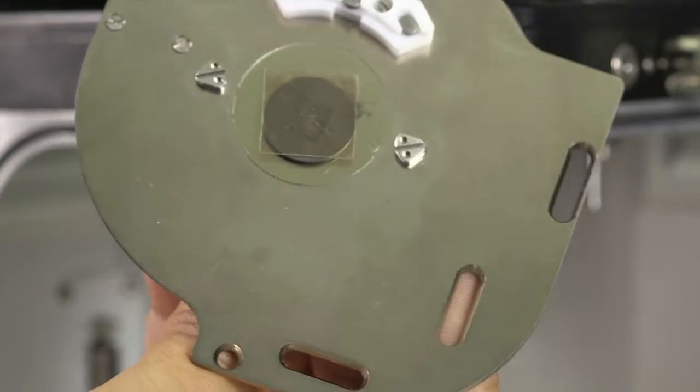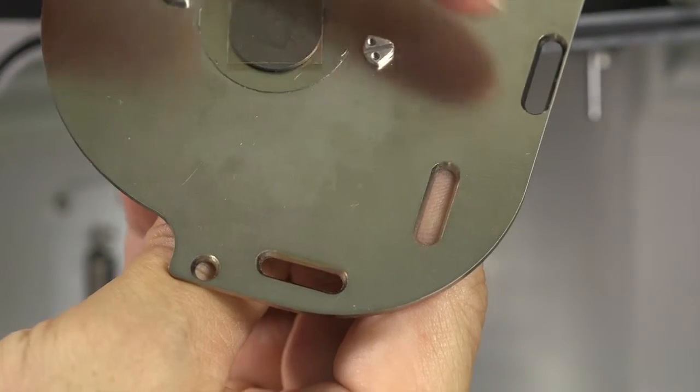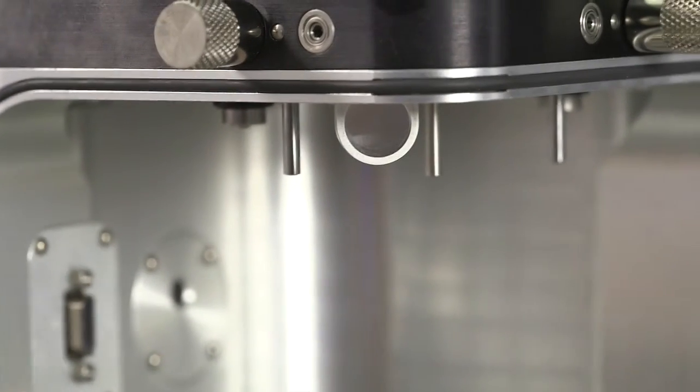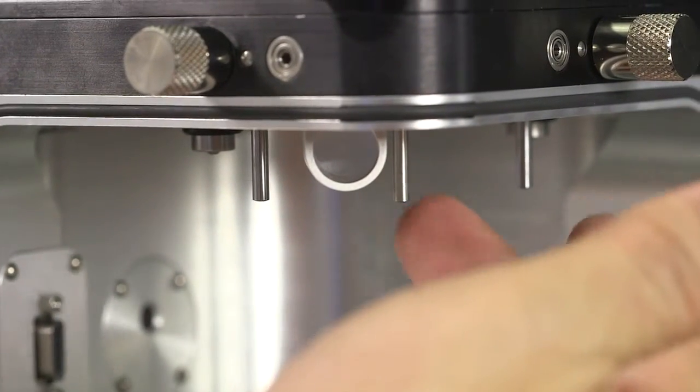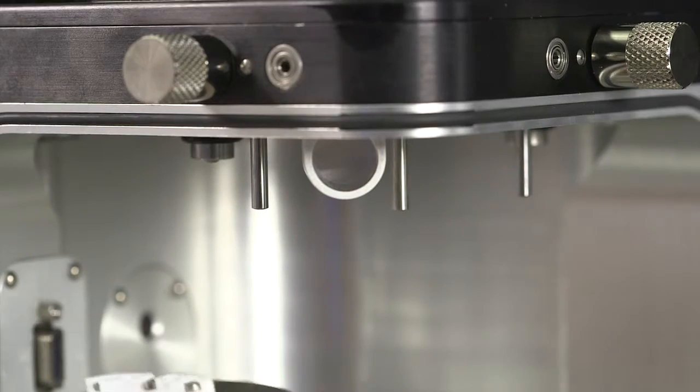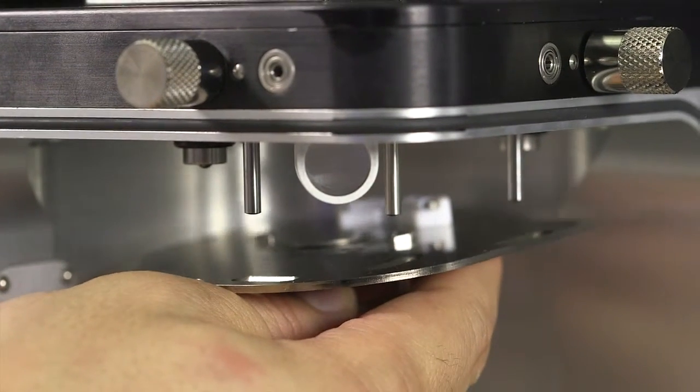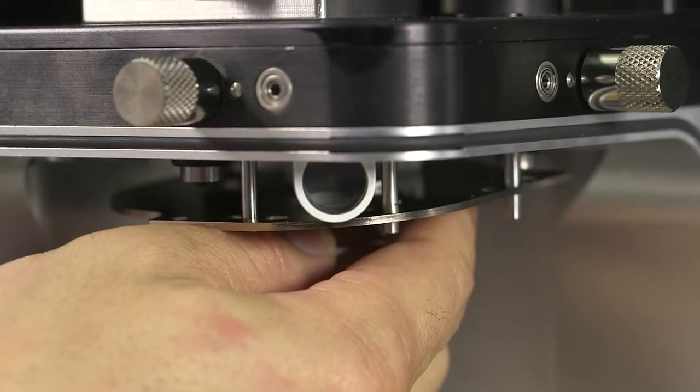There are three slots cut into the sample mounting plate, and there are three location pins in the AFM head. Make sure the three pins go into the three slots when you mount the sample plate to the AFM head.